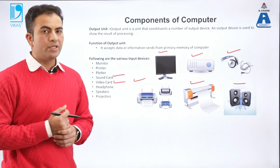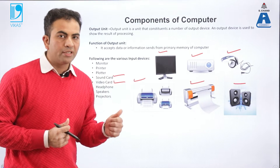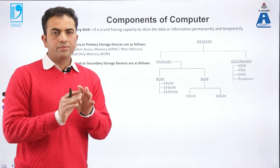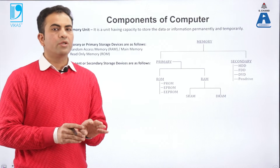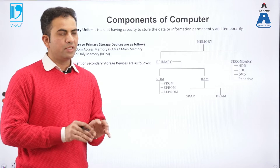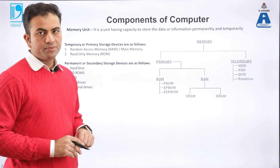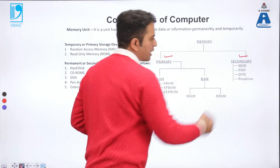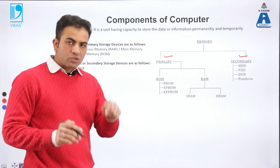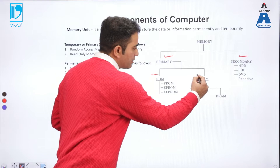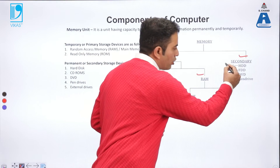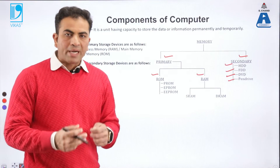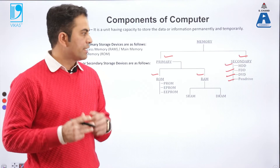These are the various components of the computer system. We have studied input devices and output devices. Now the important part is the memory unit. Memory consists of two parts: primary memory and secondary memory. Primary memory has two parts — ROM and RAM. Secondary memory includes hard disks, DVDs, CDs, and pen drives — all of these come under secondary storage devices.